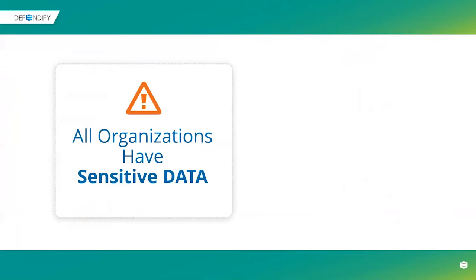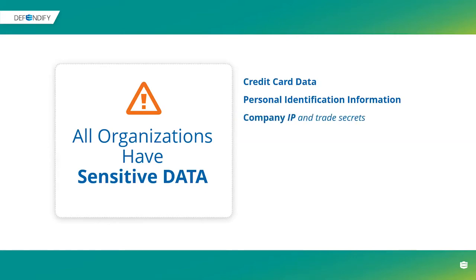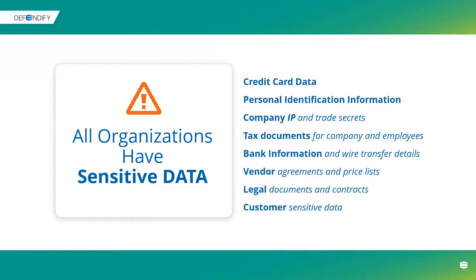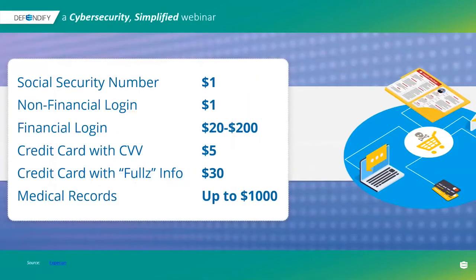Now let's talk about what they're after. All organizations have sensitive data beyond just credit cards: personally identifiable information for customers and employees, company IP and trade secrets, tax documents, bank information, wire transfer details — we discussed earlier how someone wired $2.1 million to a cyber attacker. Also vendor agreements, price lists, legal documents, contracts, and all customer sensitive data.